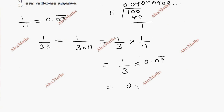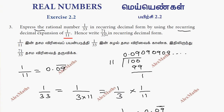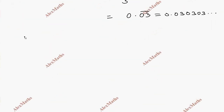1 by 11 is 0.03 bar, so 1 by 33 is 0.03 bar.